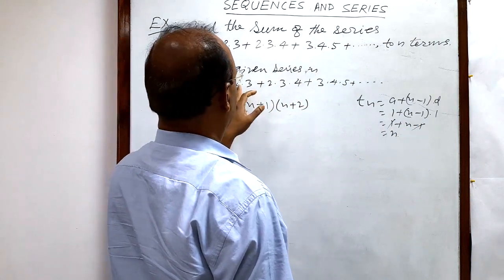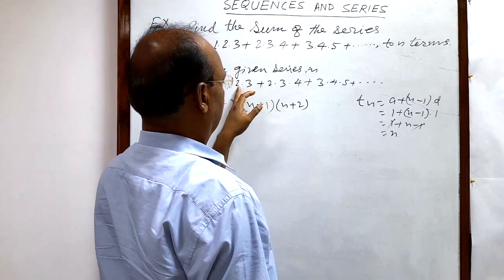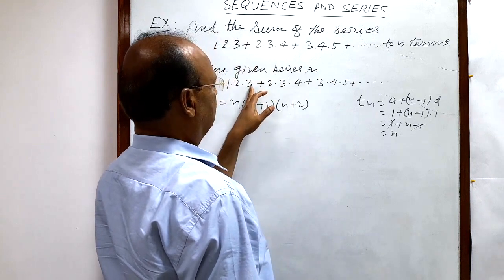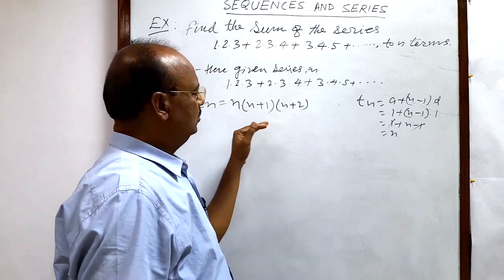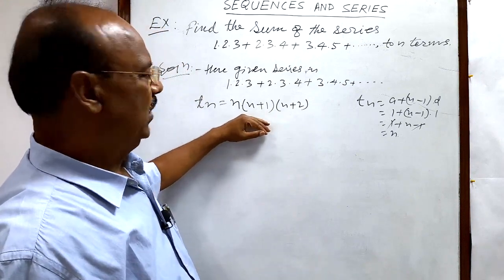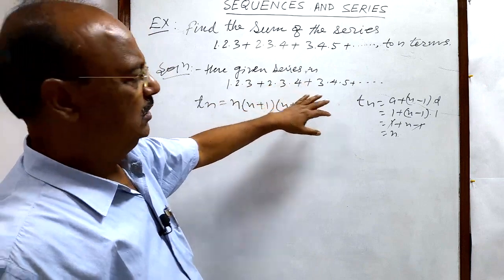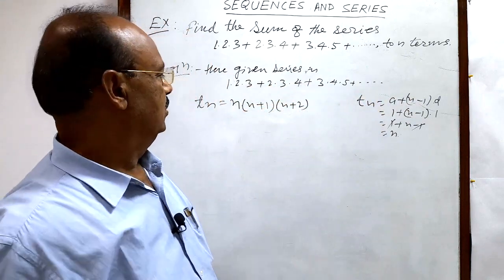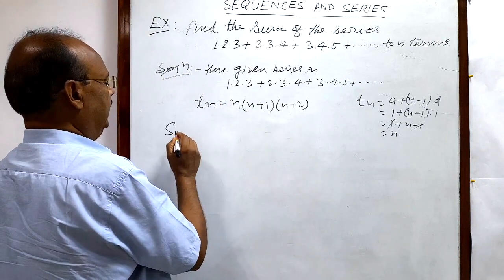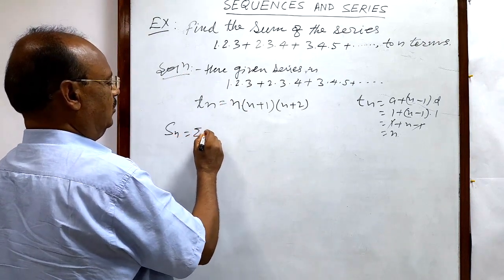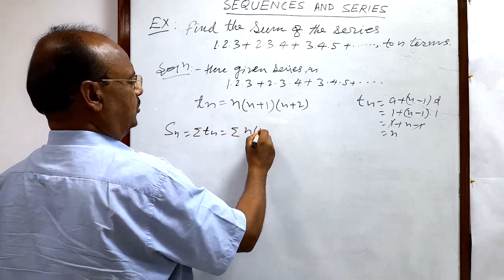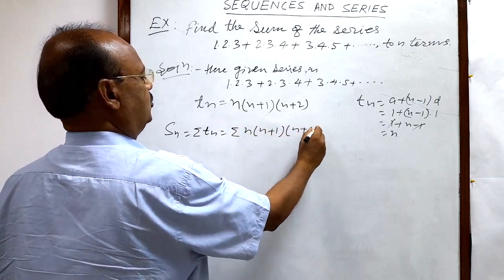Similarly, when you use the second starting number 2, you get n+1, and when you use the third starting number 3, you get n+2. So you can write the nth term by observing the pattern — using the formula is not required. The nth term is Tₙ = n(n+1)(n+2). Now to find the sum, Sₙ = Σ Tₙ = Σ n(n+1)(n+2).